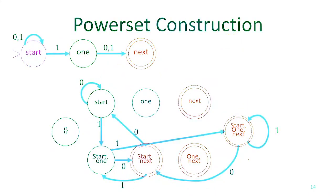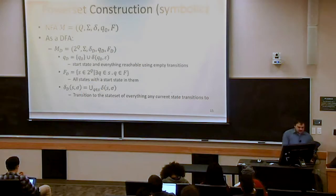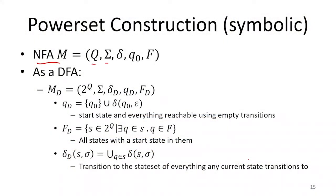This is drawing that out by hand to verify. If we wanted to represent this symbolically: given an NFA with states, an alphabet, transitions, a start state, and final states, the deterministic version has a set of states that becomes the power set of the original set of states. Because of this, we call this the power set construction — sometimes also called the subset construction.